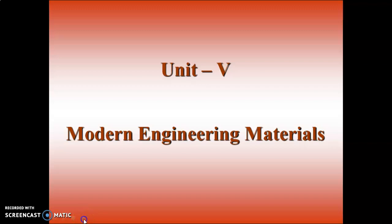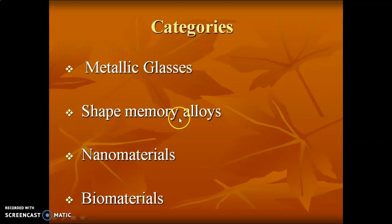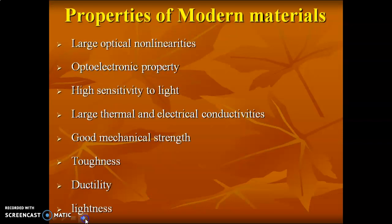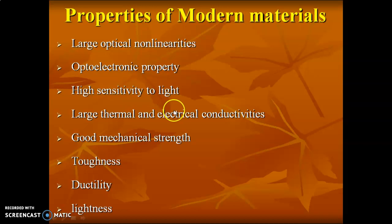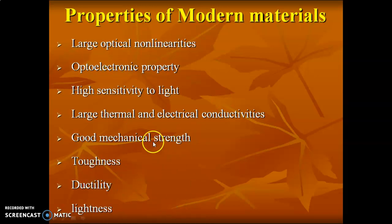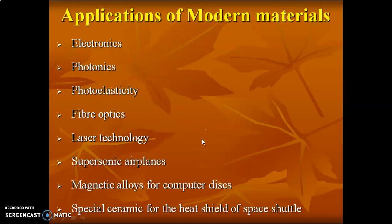Good morning. Today we are going to see about modern engineering materials — specifically metallic glasses. First, we are going to see what are the different properties of a material which exist in today's modern materials. These will include large optical electronics, non-linearities, optoelectronic property, high sensitivity to light, large thermoelectrical conductivity, good mechanical strength, toughness, ductility, and lightness.